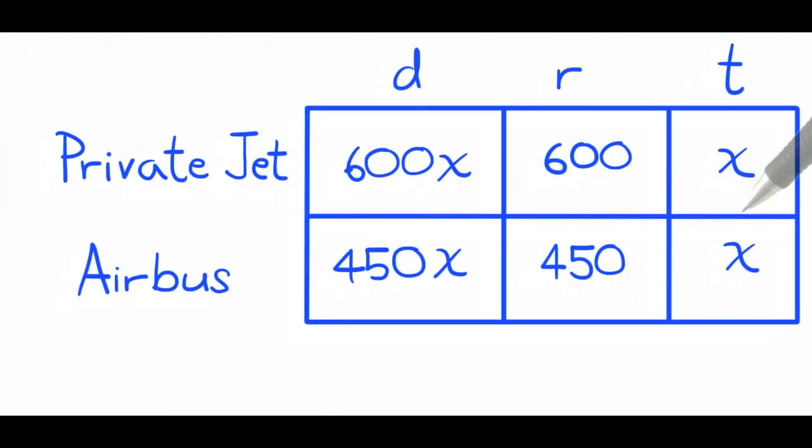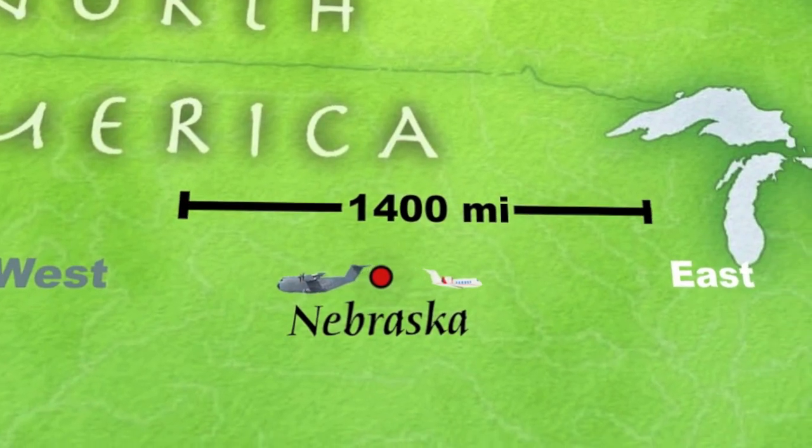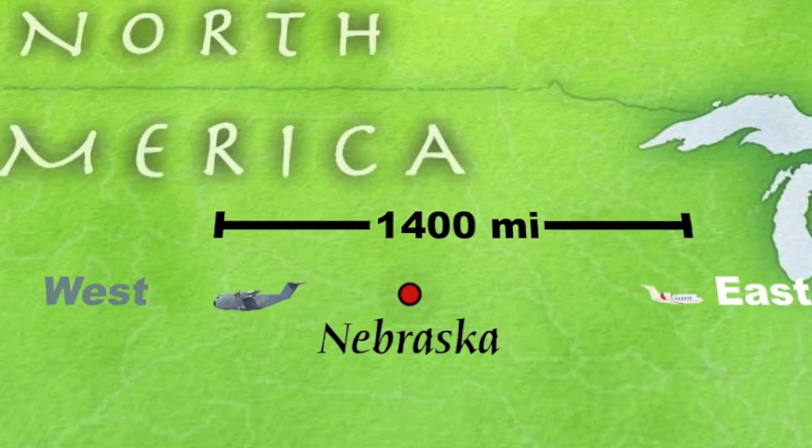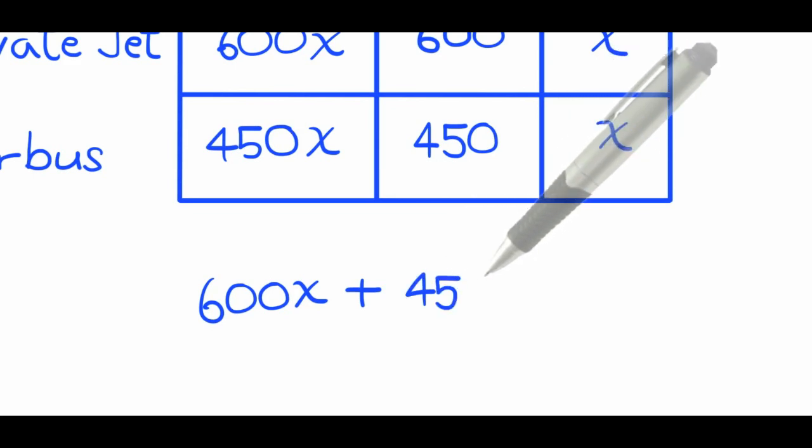Now, let's talk about the relationship between the two distances. Since both planes are traveling in opposite directions, the sum of their distances they each traveled is their total distance apart, 1,400 miles. This is our equation: 600x plus 450x equals 1,400.